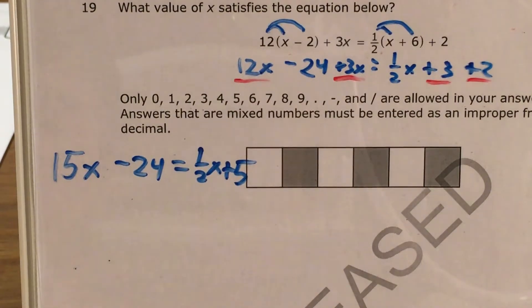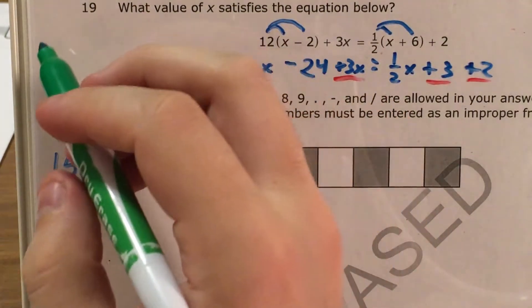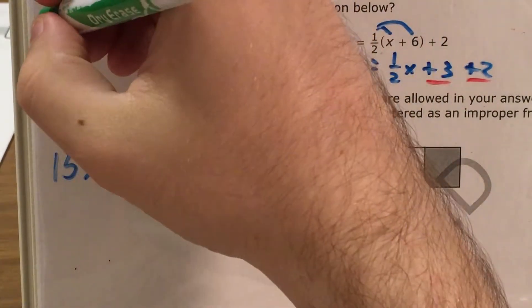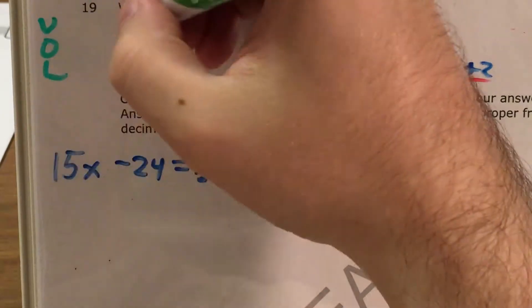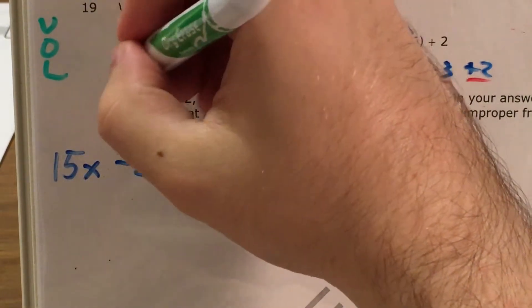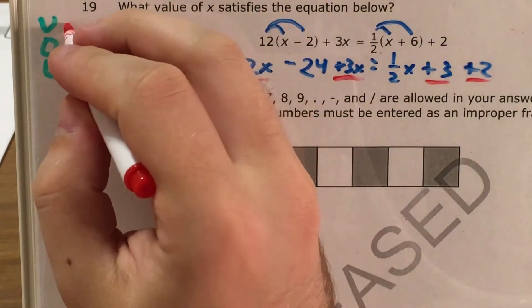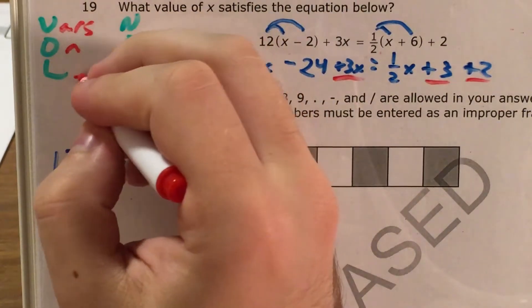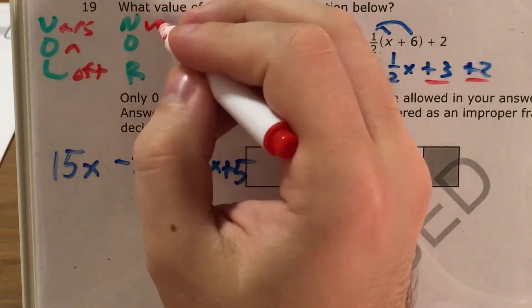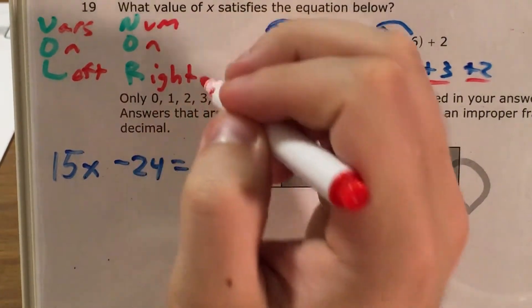Alright so now that I see that I have an equation with a variable on both sides and just variables and numbers, I'm gonna break out what I call my Volnor trick, where I say I want my variables on the left and then all my numbers on the right.